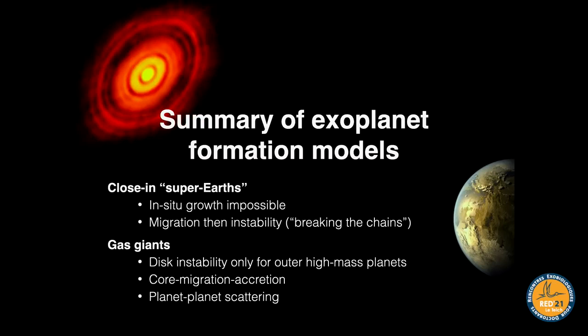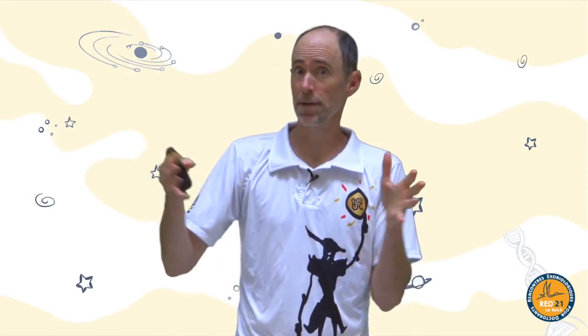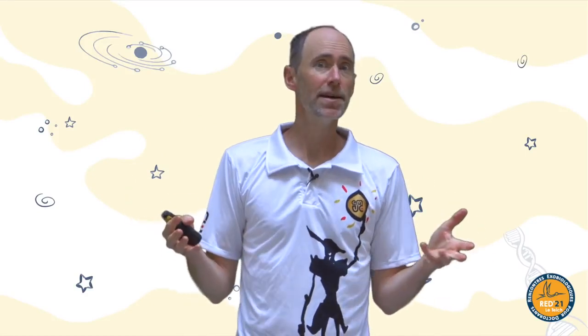To summarize the exoplanet formation models: for close-in super-Earths, in-situ growth is not possible, but migration is unavoidable. The general idea of migration into resonant chains followed by instability leading to collisions — sometimes called 'breaking the chains' — works nicely to match the period ratio distribution. Open questions include where the first planetesimals form and whether migrating planets are rocky or mostly icy.